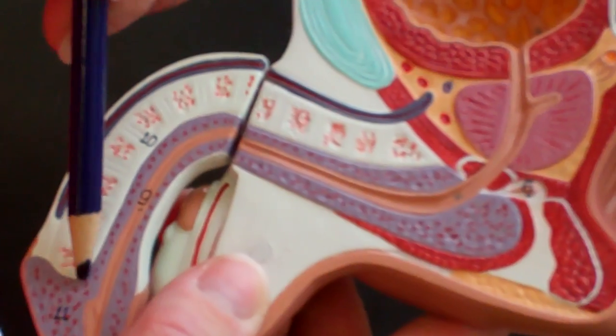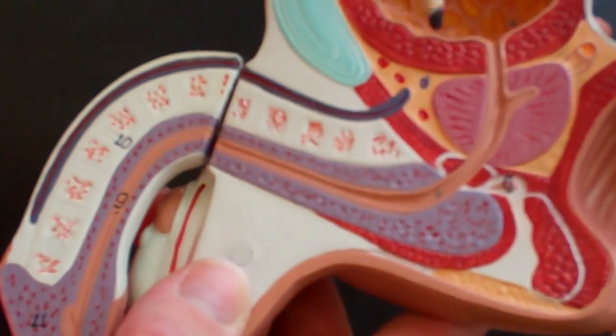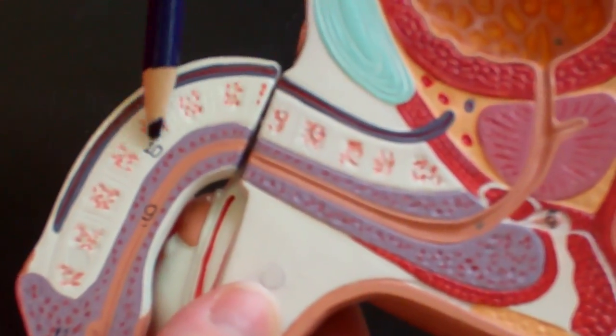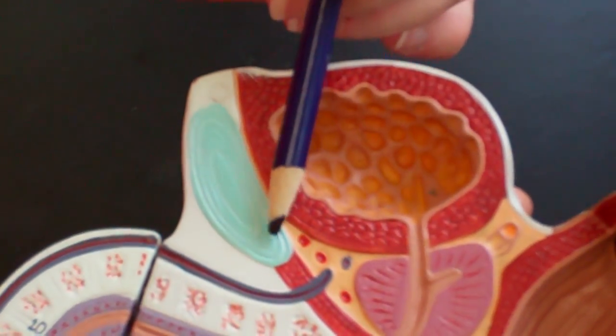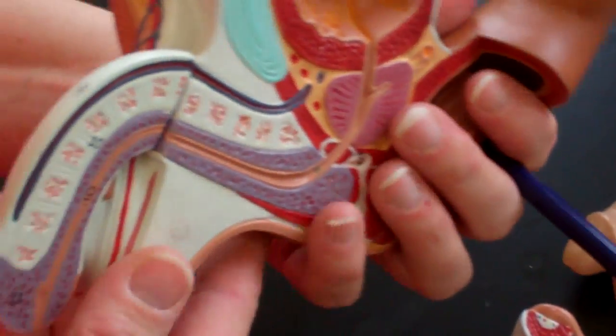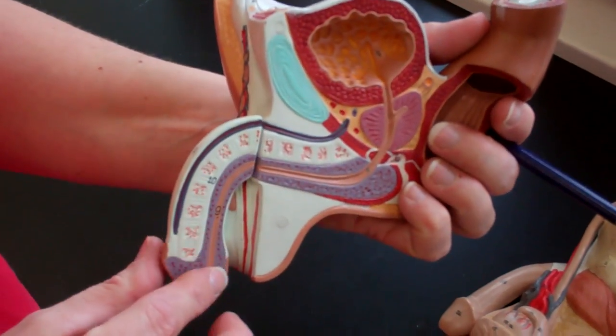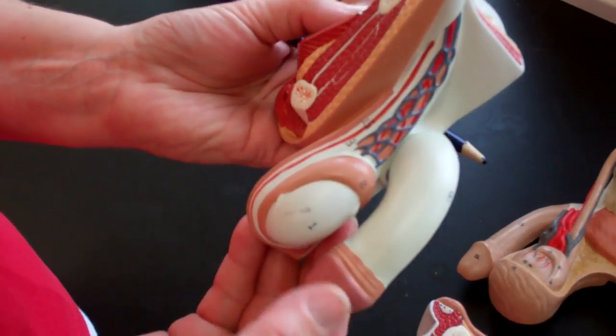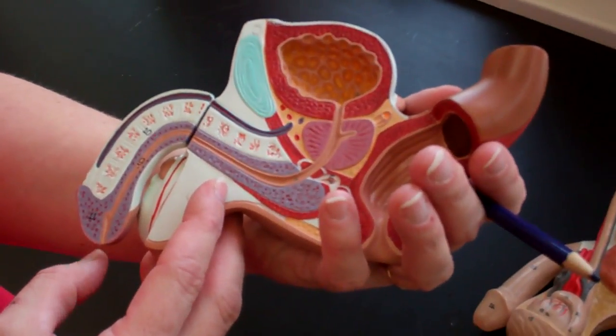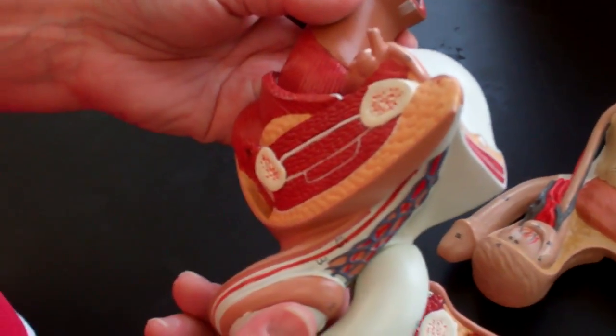And then in purple on this model is the corpus spongiosum. And the corpus cavernosum is in white. Pubic symphysis. And I should mention that all of this is considered the penis. The rounded end is the glans penis.